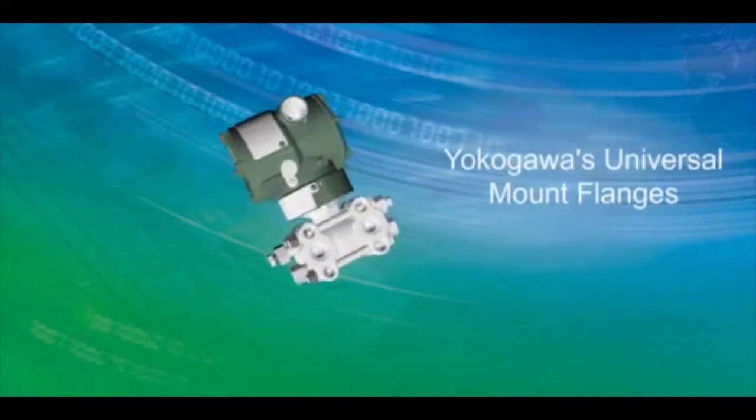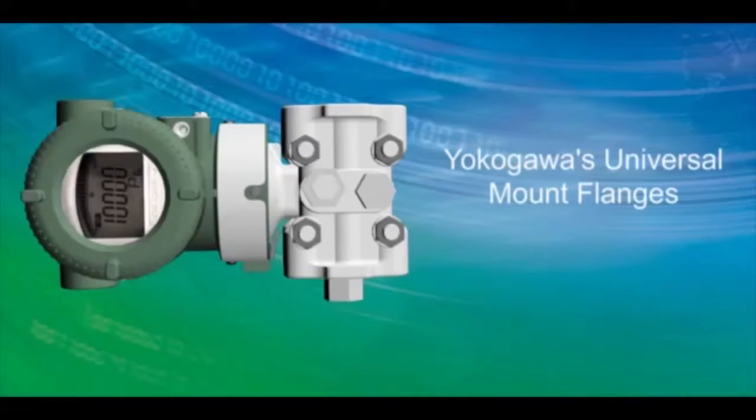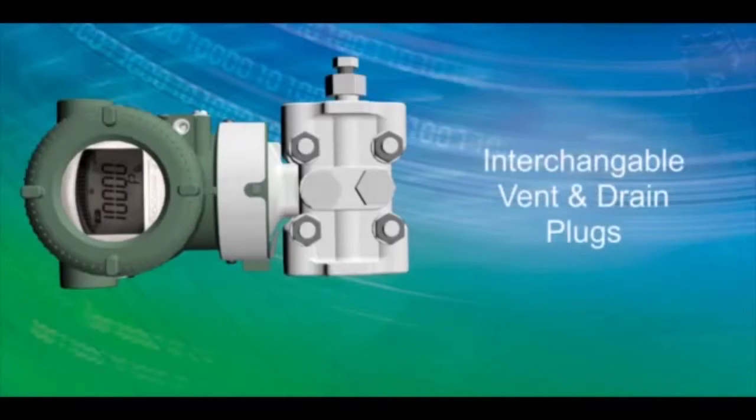Yokogawa's universal mount flanges allow for installation in both vertical and horizontal impulse line installations by providing interchangeable vent and drain locations.